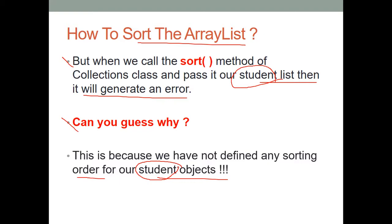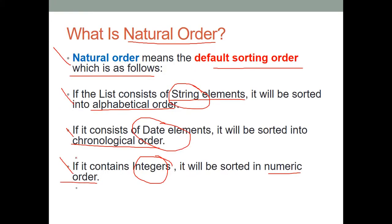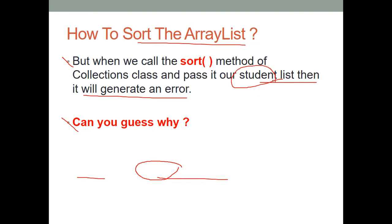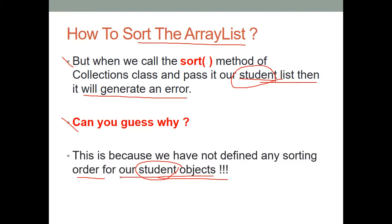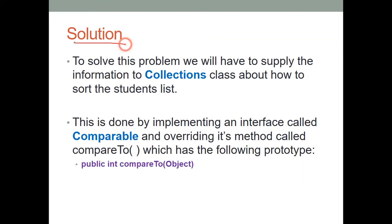Java provides features to do this for wrapper classes. Classes like Integer, Float, Double, and String are all built-in wrapper classes — you don't need to worry about them because those classes already have sorting features built in. But your Student class is a custom class, so those features are not available. That's why you have to implement it yourself. So, what is the solution to this problem?